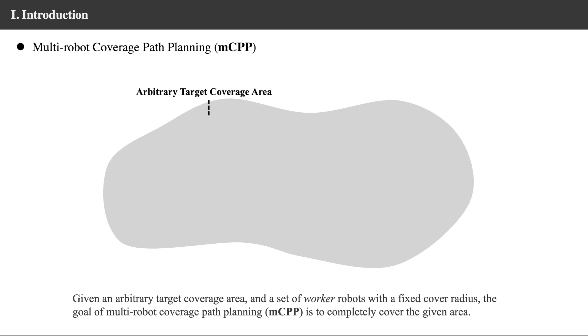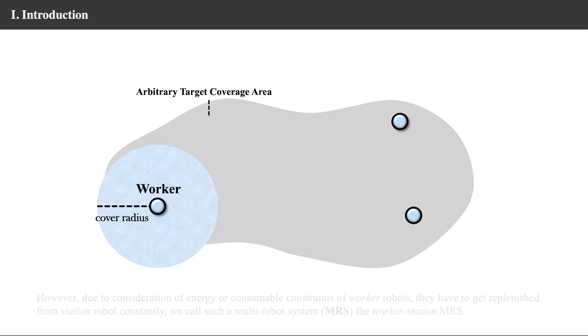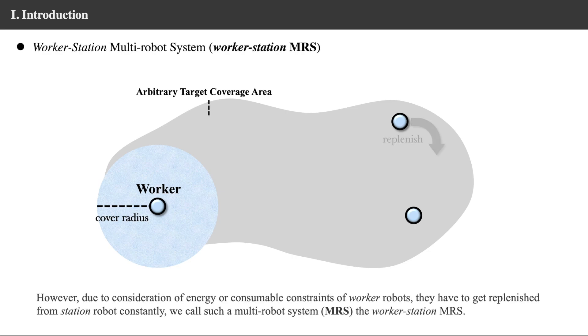Given a target area and a set of worker robots, the goal of MCPP is to completely cover the given area. However, due to energy or consumable limitations of worker robots, they have to get replenished from station robot constantly. We call it the worker station MRS.